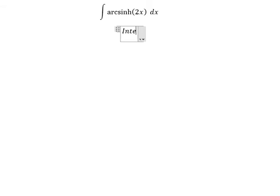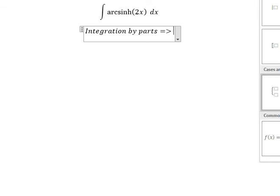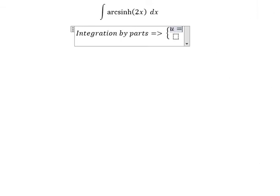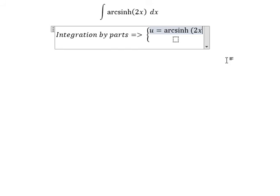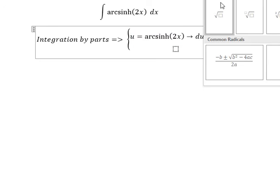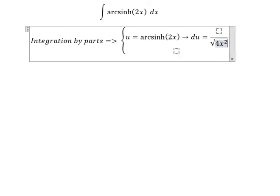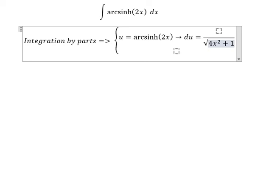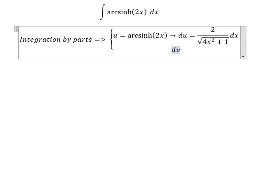So we have u and dv. Let u equal arcsinh(2x), so we got du equals 2 over the square root of 4x² + 1. The numerator is 2 because the first derivative of 2x gives us 2. dv equals dx, so we have v equal to x.